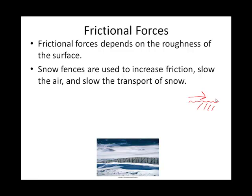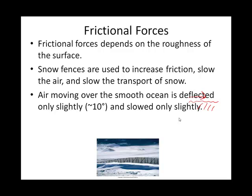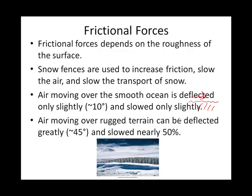For instance, when we use snow fences, what we're trying to do is increase the roughness and slow down the wind. Terrain has a difference with regard to slowing down or not slowing down the wind, and that would be because of something called a coefficient of friction that would differ for smooth versus rough surfaces.